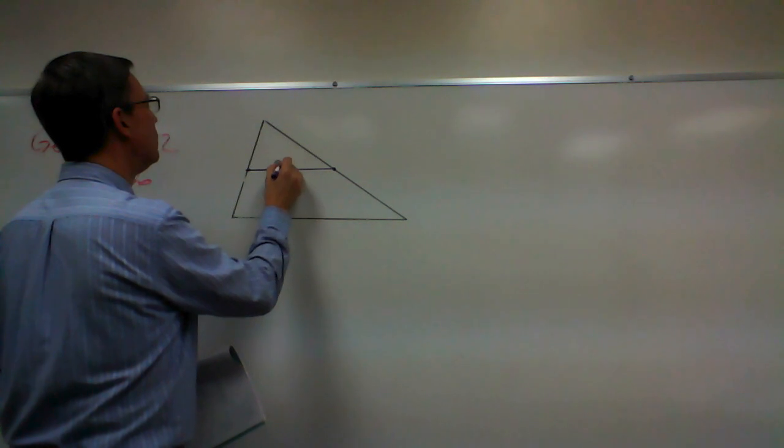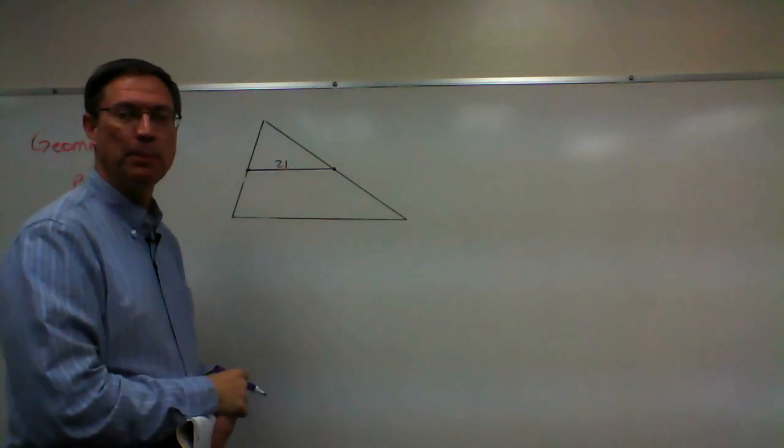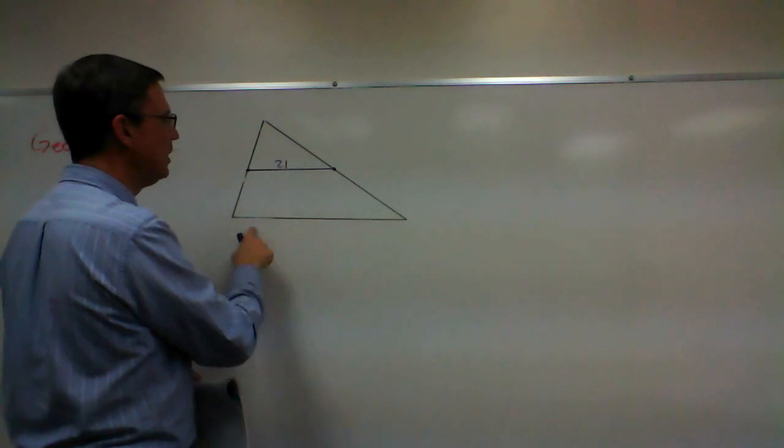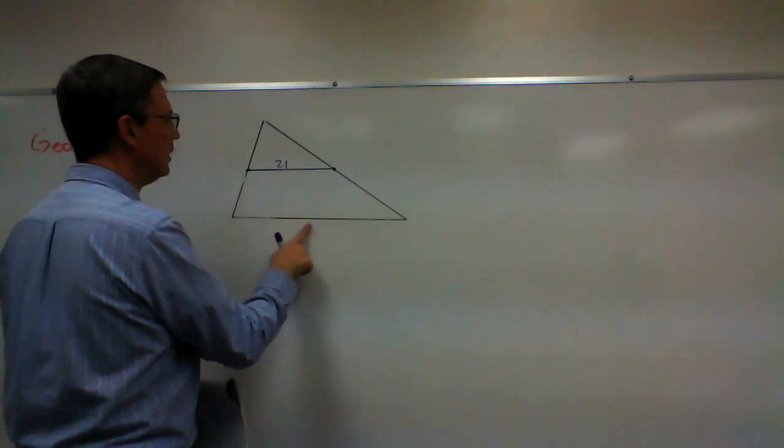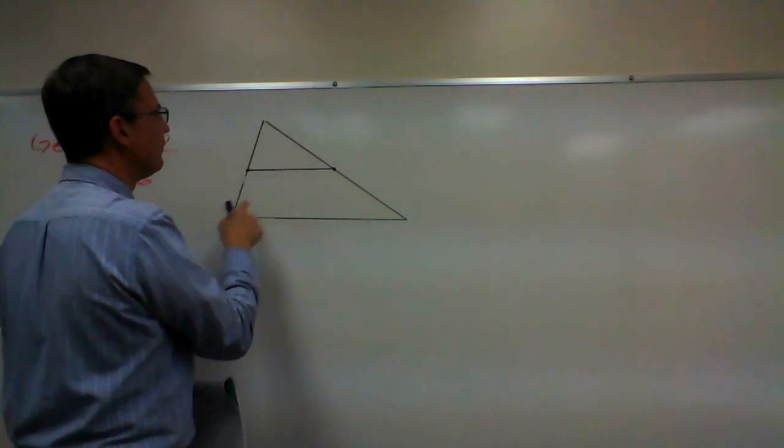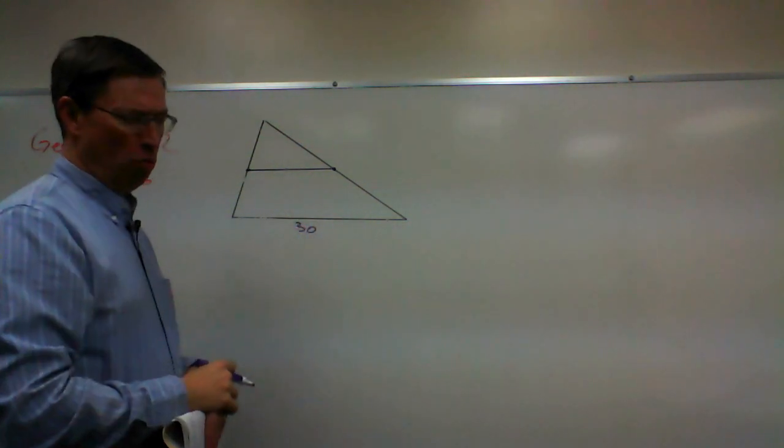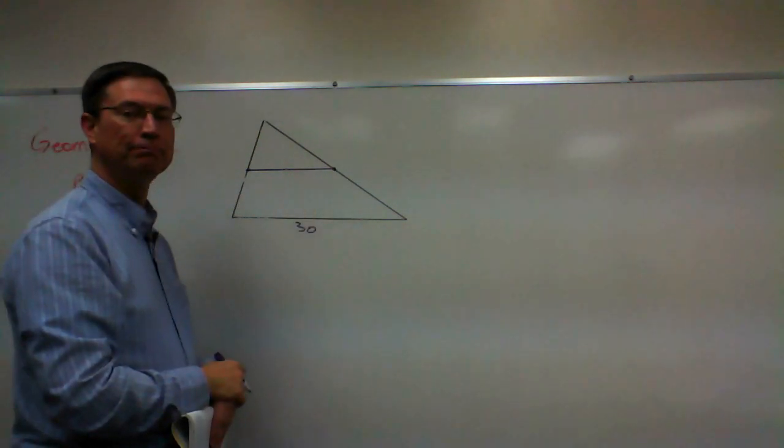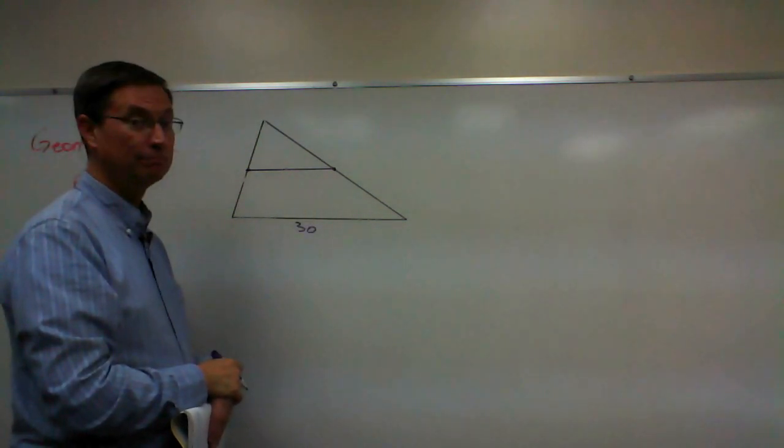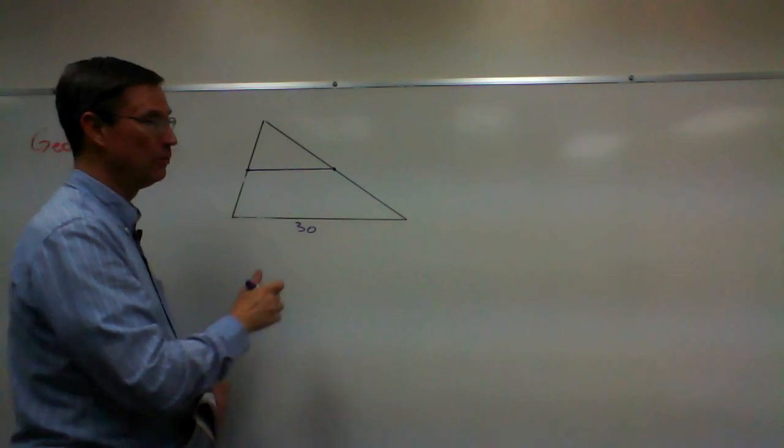Let's say this one is 21, just make up a number. If we know that's 21, this one has to be double it. It has to be 42. We could go the other way. If the long one is 30, then what would this one coming through the middle have to be? 15, right.